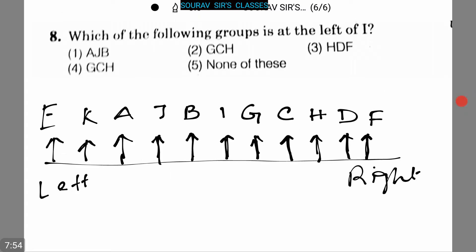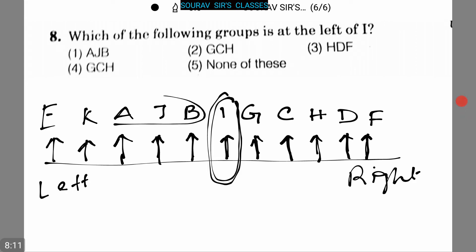The last question is: which of the following groups is sitting to the left of I? The first option is A, J, B. Here the first option is the correct answer — A, J, B are sitting to the left of I as a group.